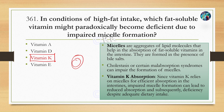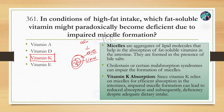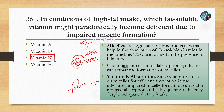Micelles are basically aggregates of lipid molecules that help in absorption of fat-soluble vitamins in the intestine. They form in the presence of bile salts released by the gallbladder. Bile salts are produced by our liver, stored by the gallbladder, and released into the small intestine. In certain malabsorption conditions like cholestasis, this micelle formation gets impaired. Hence, the absorption of vitamins like Vitamin K gets severely impaired. Since it is a fat-soluble vitamin, it relies on micelles for efficient absorption. Impaired micelle formation can lead to reduced absorption and subsequently cause deficiency of Vitamin K.